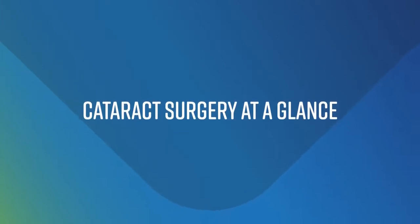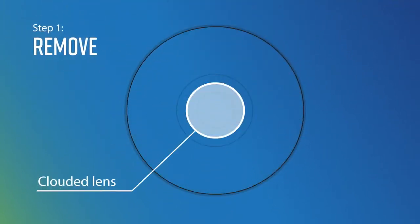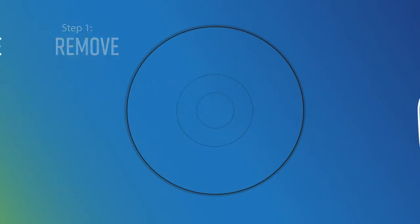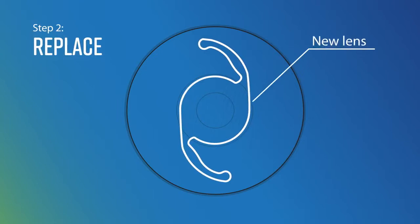During the first step of your cataract surgery, your surgeon removes your clouded lens through a tiny incision. Your surgeon then replaces your original lens with a new artificial lens.